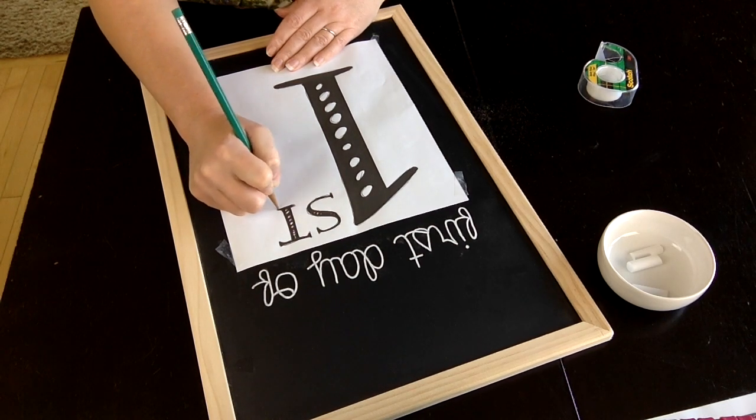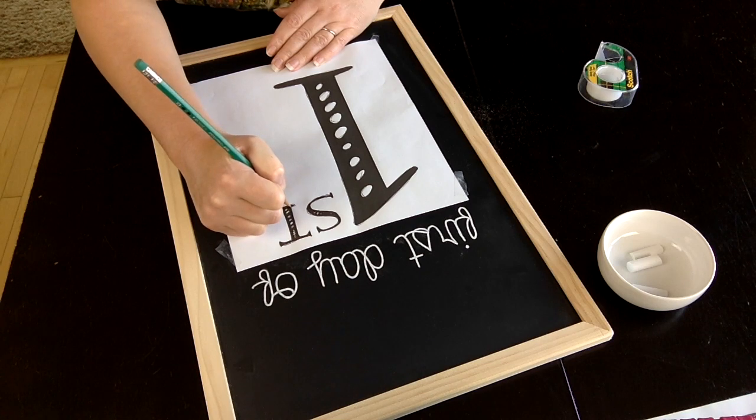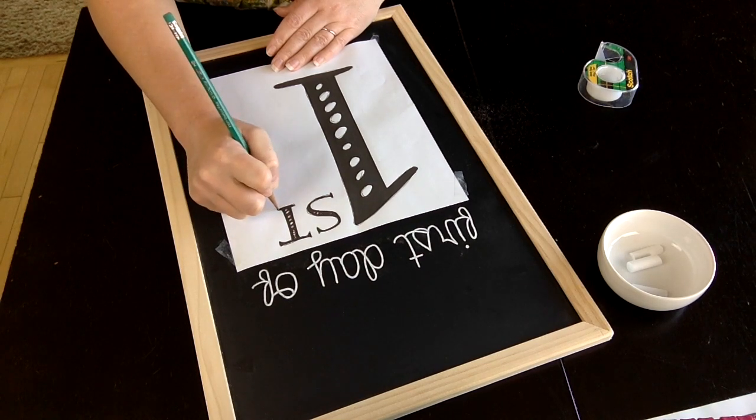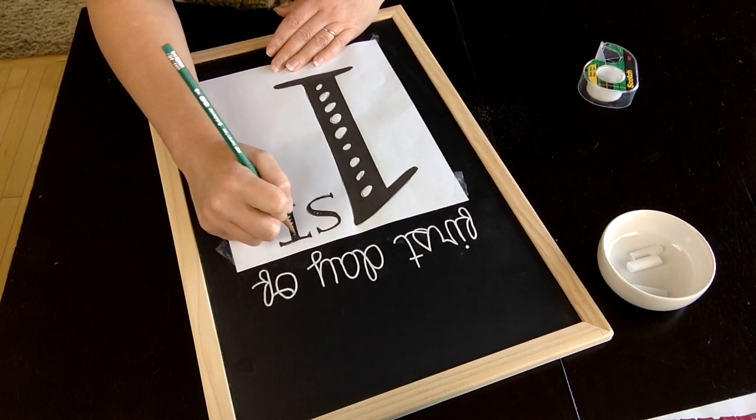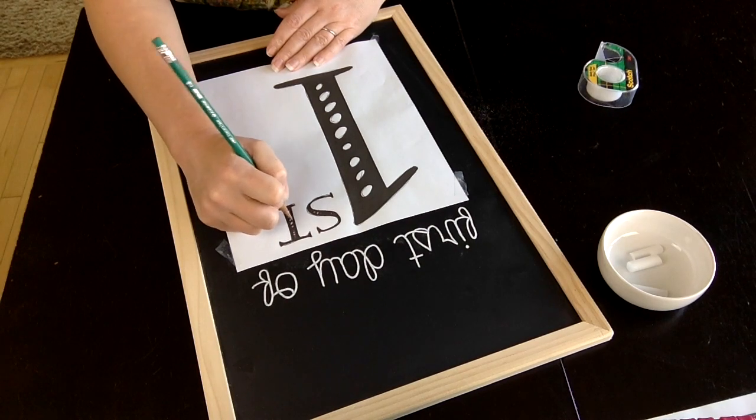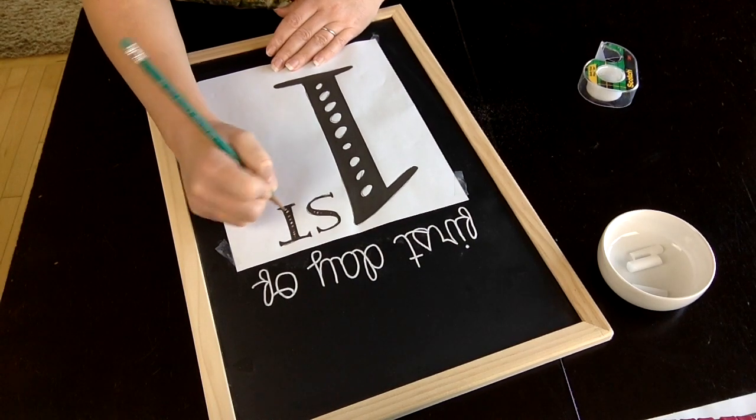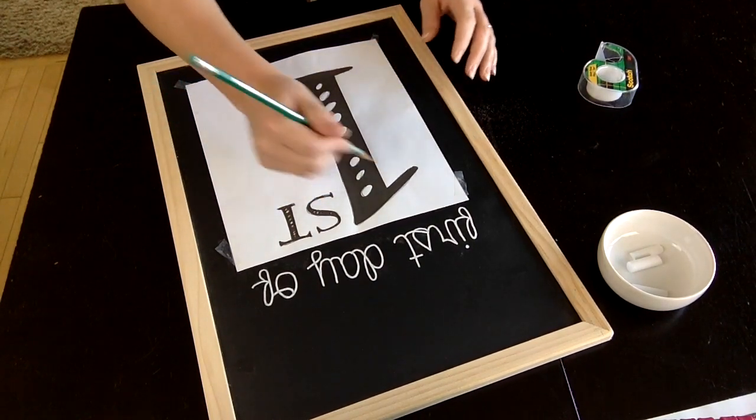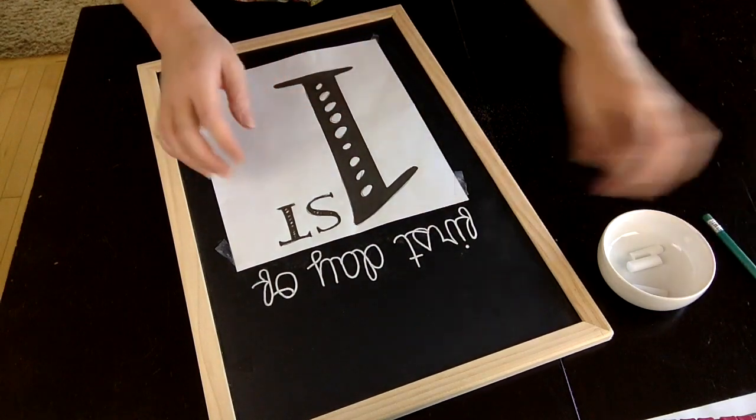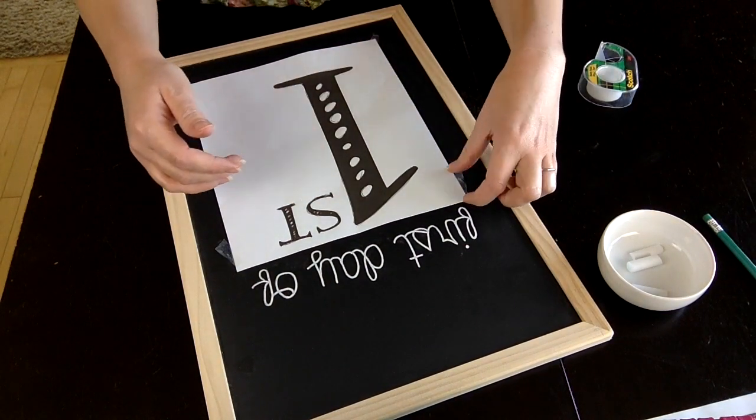If you're looking for something that looks perfect, you might want to try something other than using chalk. Chalk is supposed to look a little messy—that's kind of the charm of doing something like this. All right, so I've drawn over all of the edges and outlines that I need to, so now I'm going to...